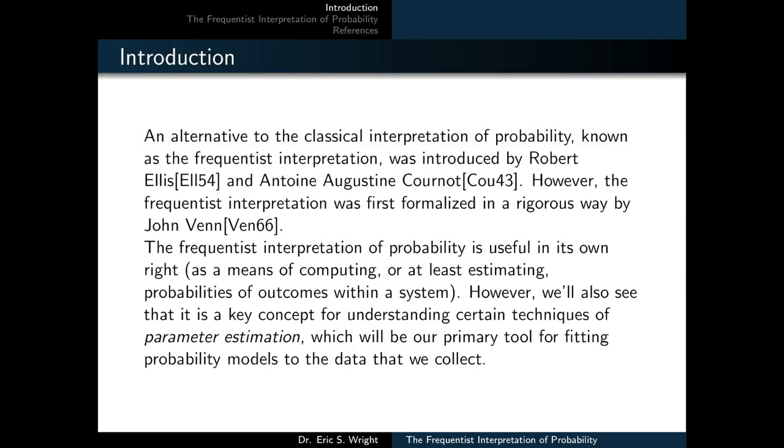An alternative to the classical interpretation of probability, known as the Frequentist Interpretation, was introduced by Robert Ellis and Antoine-Augustin Cournot. However, the Frequentist Interpretation was formalized in a rigorous way by John Venn.